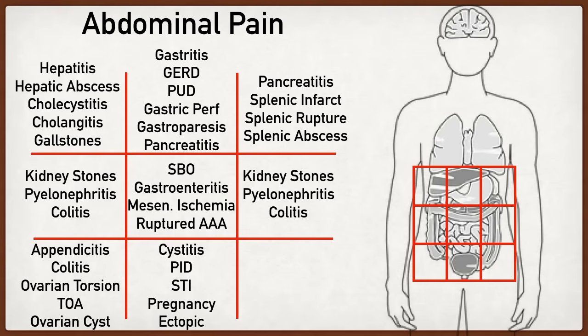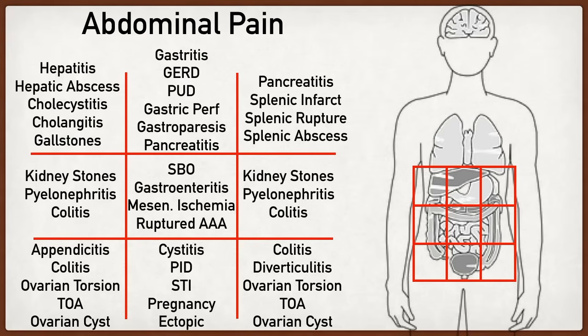Lastly, the left lower quadrant or iliac region is very similar to the right lower quadrant except there's no appendix. You may see colitis involving the descending and sigmoid colon rather than the ascending colon or cecum. You may also see diverticulitis — inflammation or infection of the diverticulum involving the colon — which is most frequently located in the left lower quadrant. Ovarian pathology with the left ovary is also similar to what we discussed for the right lower quadrant.